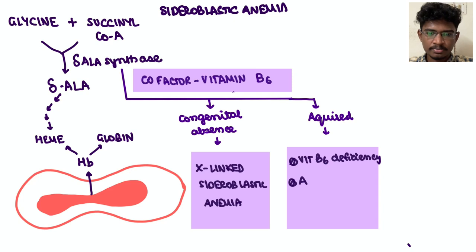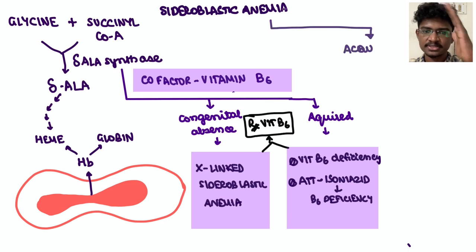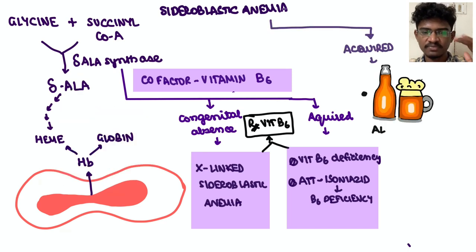And there can also be acquired deficiency of the enzyme. How? Because the enzyme's cofactor is not available - vitamin B6 deficiency. Or B6 can be depleted by concomitant drug therapies, like in ATT, isoniazid will deplete this B6. So only whenever you give ATT, we'll always prescribe pyridoxine along with ATT.